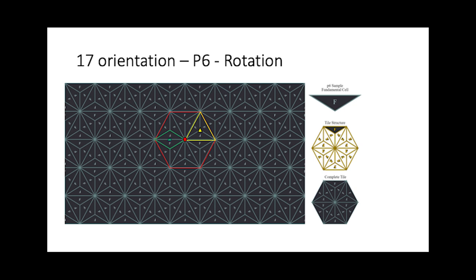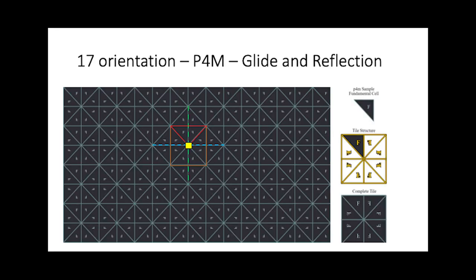And then we would have translation rotation over the infinite plane. Next, I want to talk about glide and reflection with the example P4M, where you can see the dashed green line suggests the vertical reflection, and the blue dashed line resembles the horizontal reflection. Then a red triangle, which resembles the four-fold rotation around this square complete tile, and then a final translation over the infinite plane. I'm only going to talk about three of them, because there are all 17 of them and it would take a lot of time going through all of them.